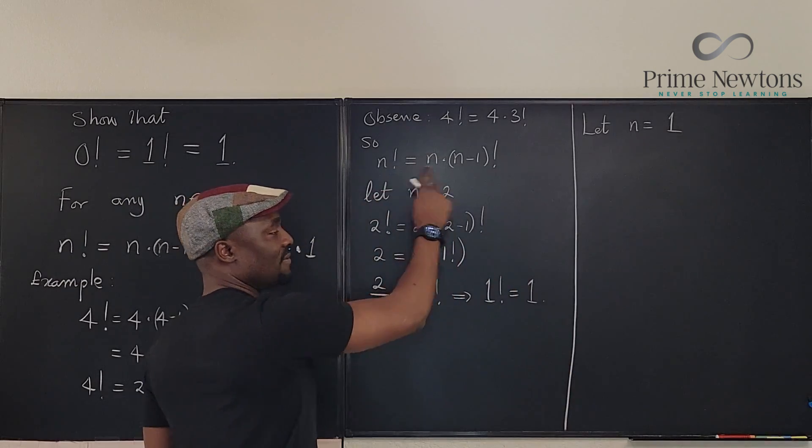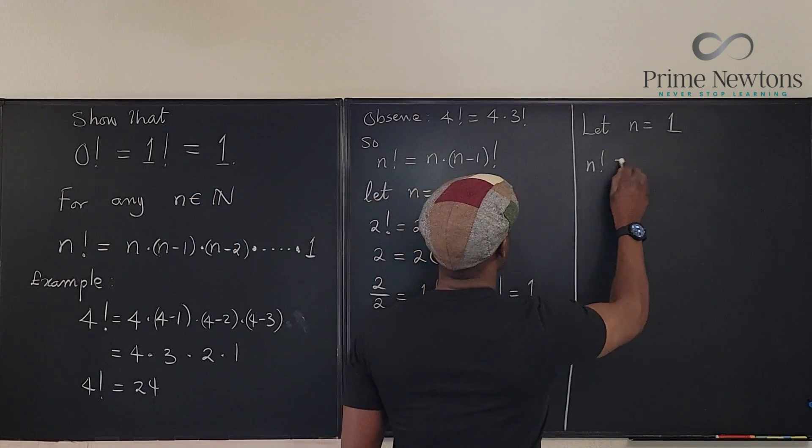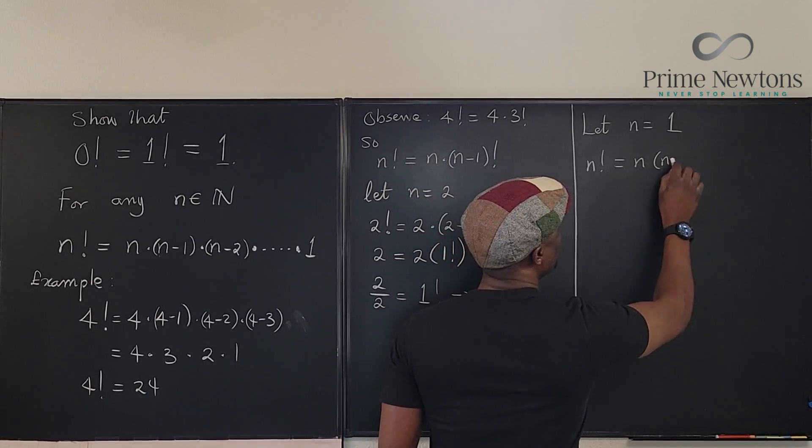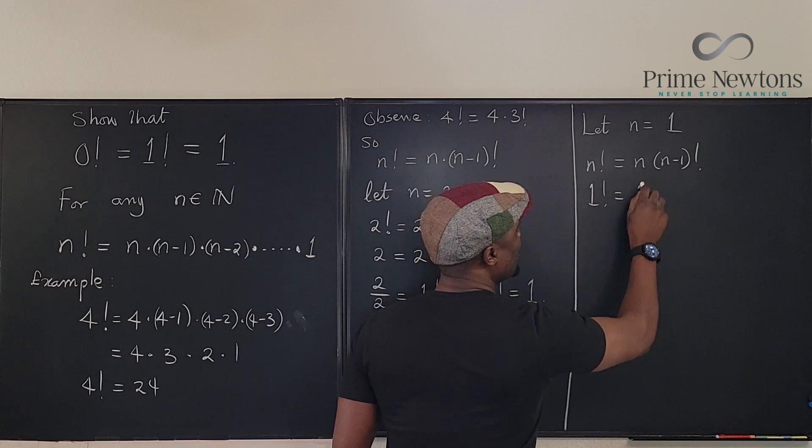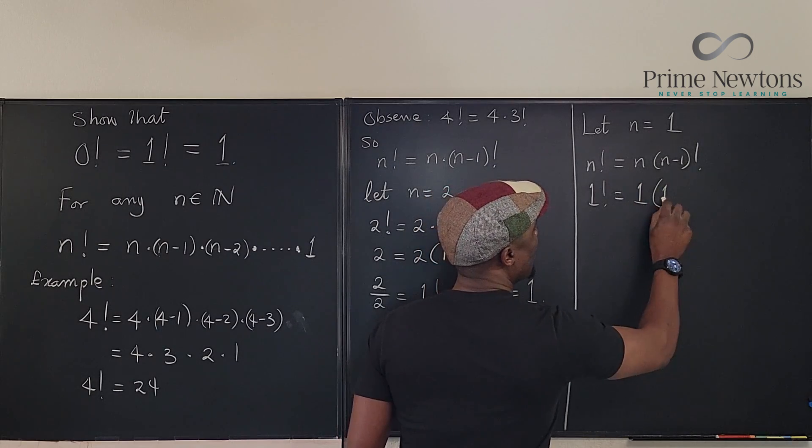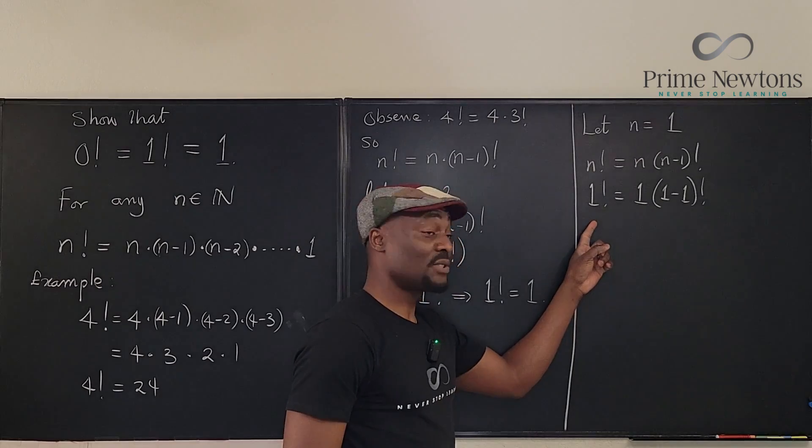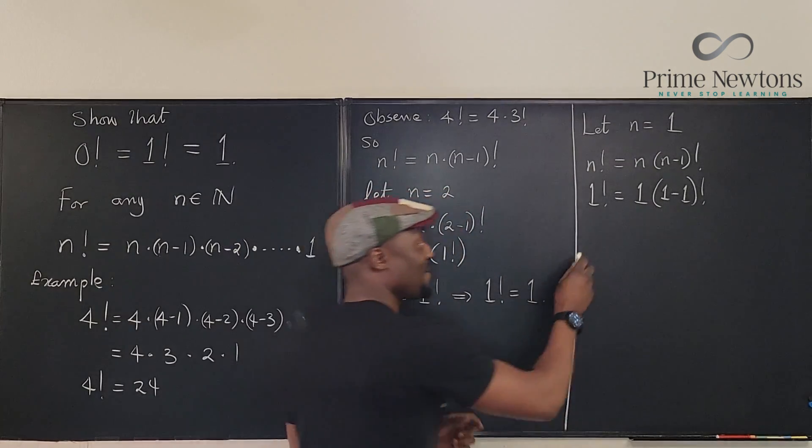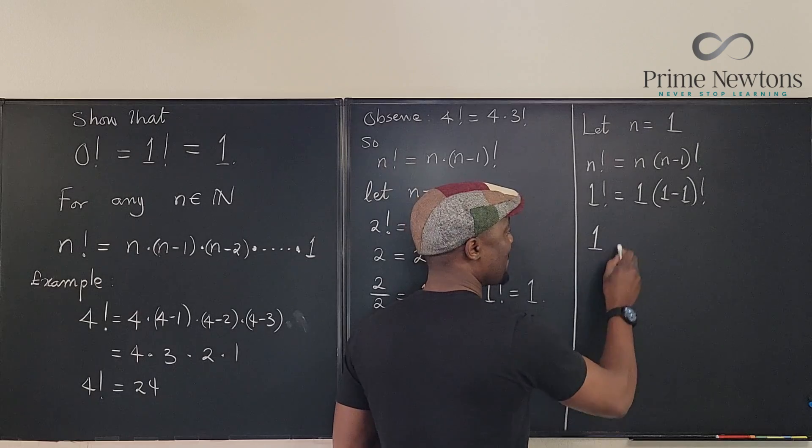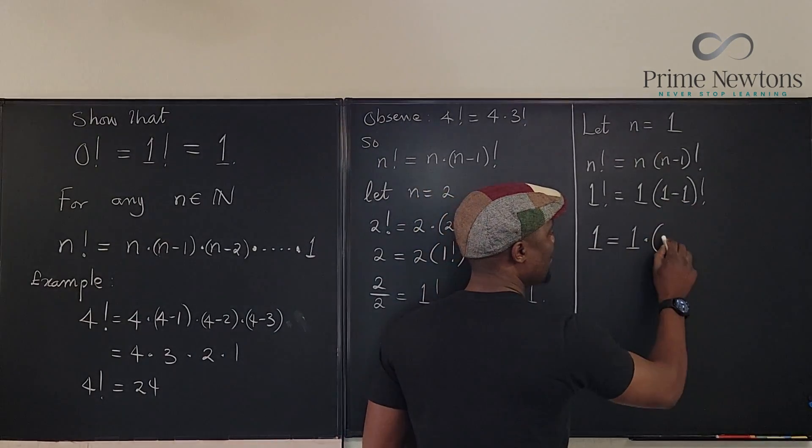Let n be equal to 1. We're still going to use this expression. So we know that n factorial equals n times n minus 1 factorial. 1 factorial will be equal to 1 times 1 minus 1 factorial. We know that 1 factorial is 1. We already showed that in the previous step.